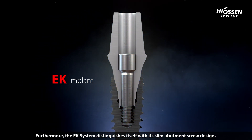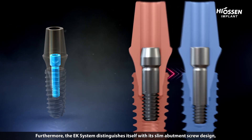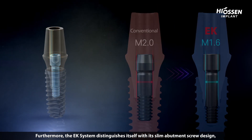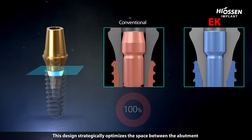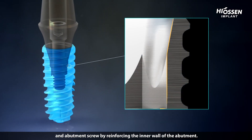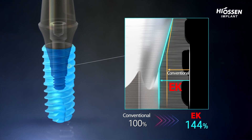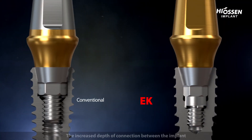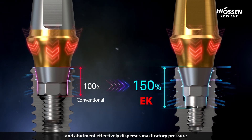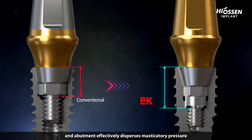Furthermore, the EK system distinguishes itself with its slim abutment screw design, strategically optimizing space by reinforcing the inner walls of the implant body. The increased depth of connection between the implant and abutment effectively disperses masticatory pressure.